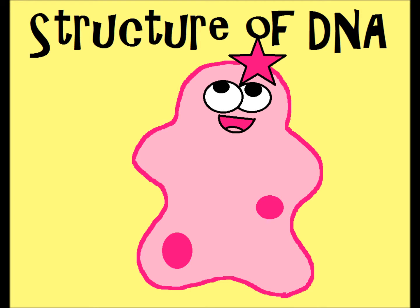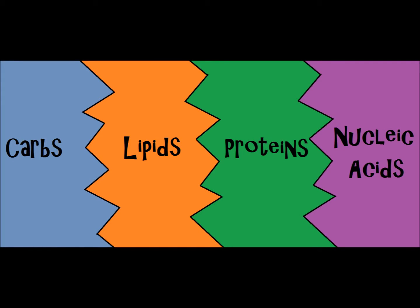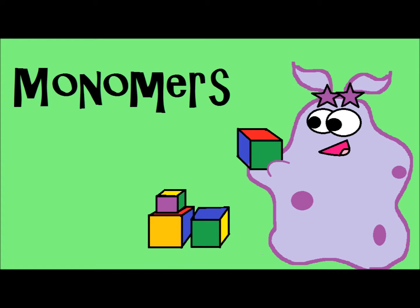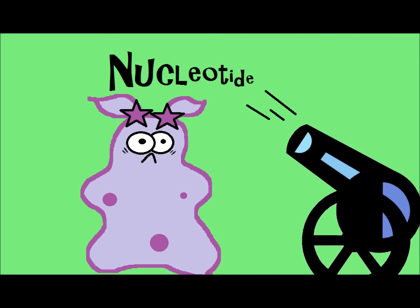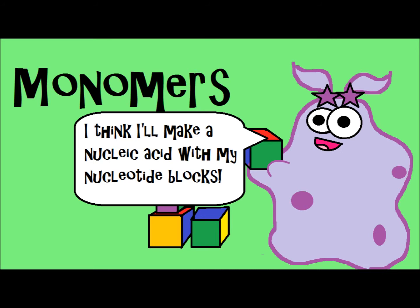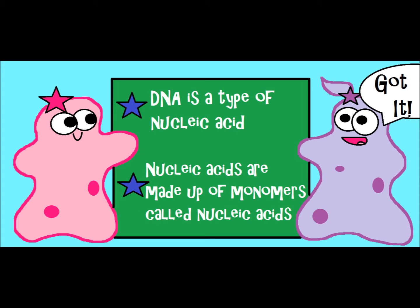Now let's talk about the structure of DNA. First, DNA is a type of nucleic acid. If you remember the biomolecules — carbs, lipids, proteins, and nucleic acids — nucleic acids are the category that DNA falls under. Like all biomolecules, there are building blocks called monomers. The building block of a nucleic acid is a nucleotide. Understanding the parts of a nucleotide is essential, because otherwise you won't understand what DNA is made of or how it functions.